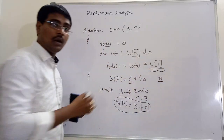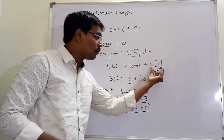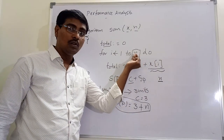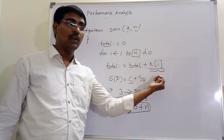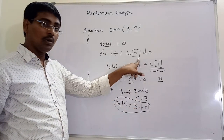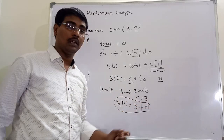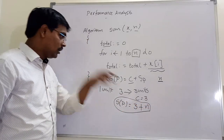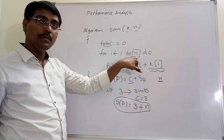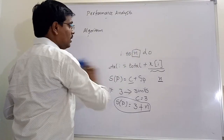Finally, S(P) = 3 + n. This part requires n units of memory — if n = 10, we need 3 + 10 units; if n = 100, we need 3 + 100 units. So the variable part depends on the input size n.